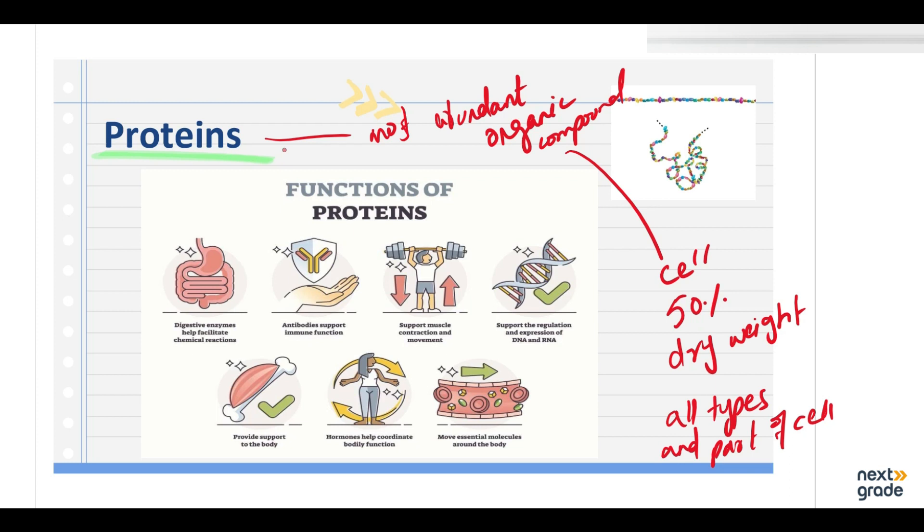Like protein, there are some digestive enzymes which are protein and they help facilitate the chemical reaction occurring in the stomach. Then some protein in the form of antibodies provide support to the immune system. This muscle contraction and movement, proteins support the regulation and expression of the DNA and RNA. They control our whole metabolism.